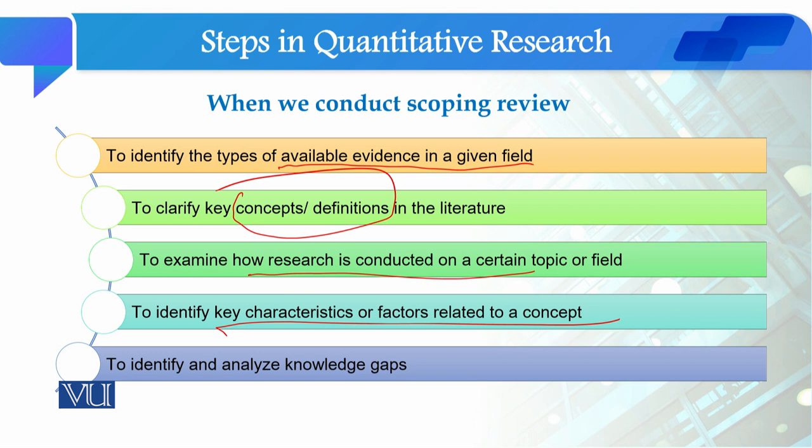Finally, the last objective is to identify and analyze knowledge gaps. Based on the scoping review, you try to identify knowledge gaps — what gaps exist in researchers' work on understanding this emerging social situation, and in which areas you can contribute to that particular field.